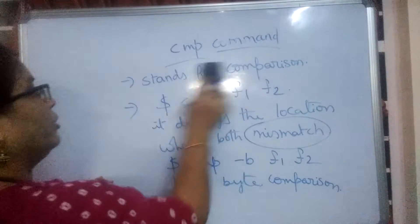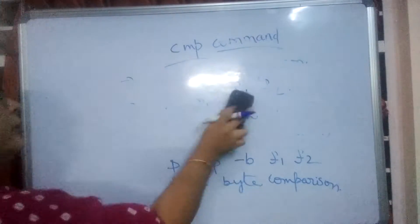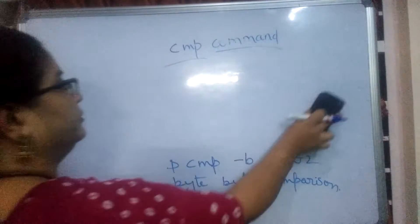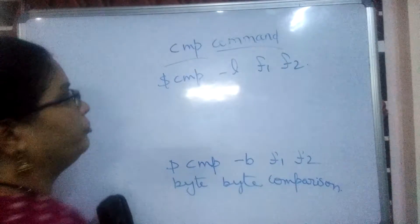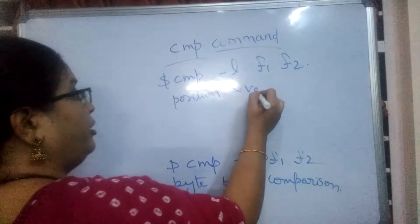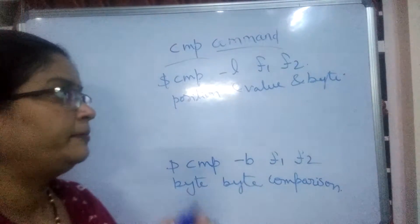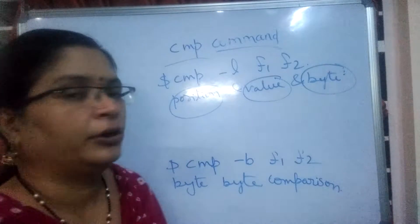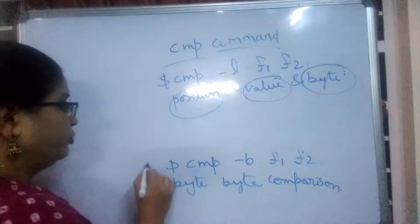Some more options are also there: hyphen I and hyphen L. The first one is hyphen L. CMP hyphen L, F1, F2 — hyphen L means the position, value and byte, all information it displays in that comparison, showing where this mismatch occurs, at which position, what is the value, and what is the byte. All information is displayed using the CMP hyphen L option.